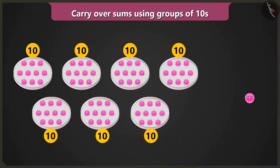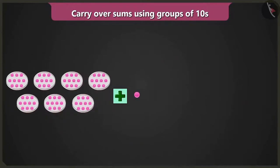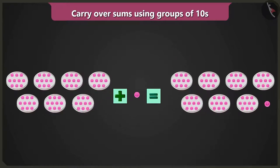Now here, there are groups of 10 buttons, each in 1, 2, 3, 4, 5, 6, 7 plates that make 70 buttons and add one loose button to these will make 71 buttons.